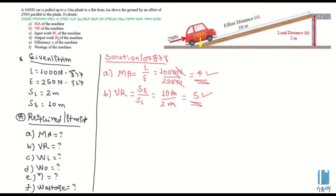Then C is the input work. Input work WI — input work is the same as effort times effort distance. The effort is based on the effort distance. The minimum value is the effort times the distance of effort.